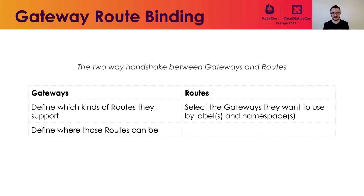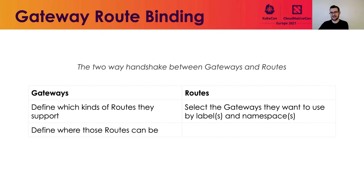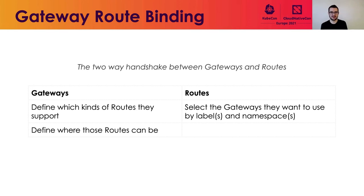When we talk about routes, we really have to talk about how they're connected to gateways. The key thing to remember is it's a two-way handshake between gateways and routes — both have to agree that they can be bound to each other. Within the same namespace, we have sane defaults that make it easy to connect gateways and routes. But there's also a new kind of functionality: gateways referencing routes in multiple namespaces. This is a really powerful concept, and that's why we have this two-way handshake to ensure both the gateway and route are on board.